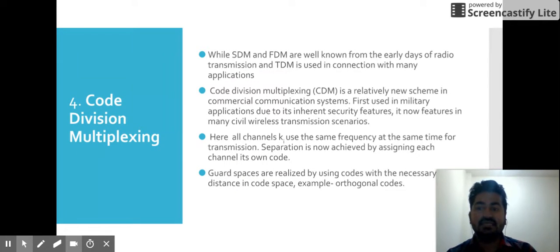Next and the final one is code division multiplexing. Let's understand what is code division multiplexing. FDMA and FDM are well known from early days of radio transmission. TDM is used in connection with many applications. Code division multiplexing is relatively a newer scheme in commercial communication systems. It was used in military applications because of its high security features. It now features in many civil wireless transmission scenarios.